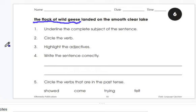Number two, circle the verb. What is the action that the flock of wild geese is doing? They landed. So circle landed.